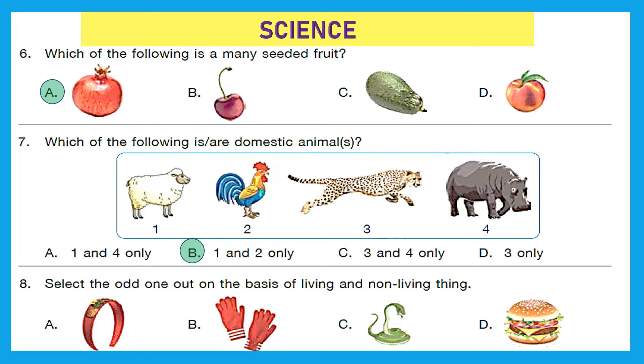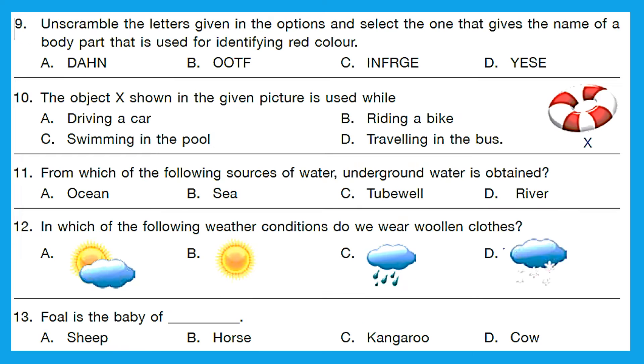Question 8. Select the odd one out on the basis of living and non-living thing. Let's see. A is your hairband, B is gloves and C is snake, D is burger. So A, B, D, these three are non-living things whereas C, snake is a living thing. So for us option C is odd one out. Question 9. Unscramble the letters given in the options and select the one that gives the name of a body part that is used for identifying red color. How do we identify any color? By our eyes, right? So let's first unscramble all options and find where to find eyes. A will give you hand, B will give you foot, C will give you finger and D will give you eyes and we got our option, that's option D.